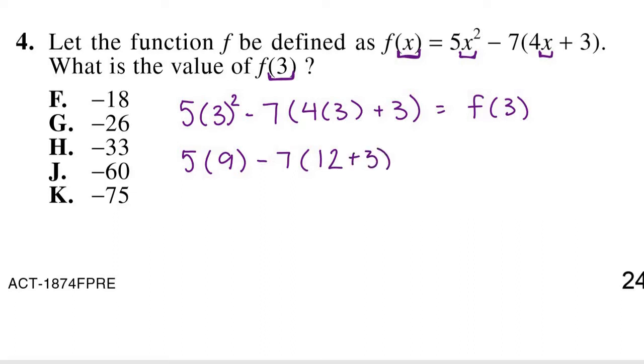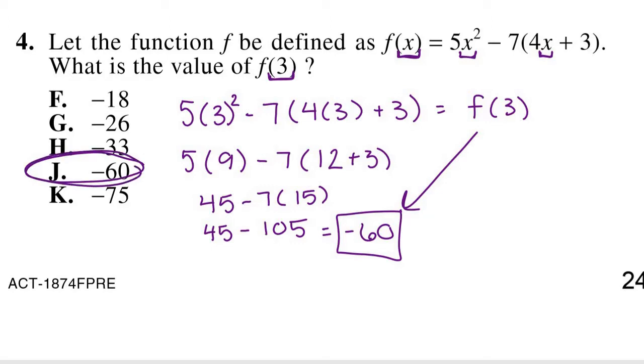Now we can add our parentheses and multiply 5 times 9. That's 45 minus 7 times 15. Now we bring the 45 down and we get 7 times 15, that is 105. 45 minus 105, well that's negative 60. So that is our answer for what is the value of f(3). f(3) is equal to negative 60. That's what the question is asking. So our answer is J, negative 60.